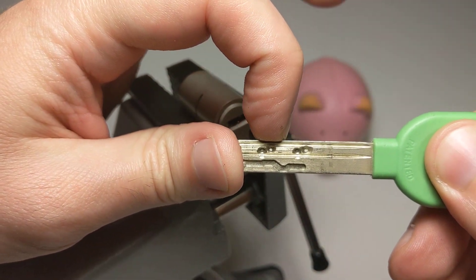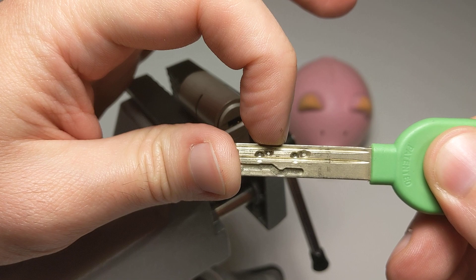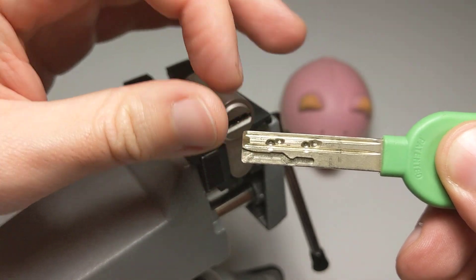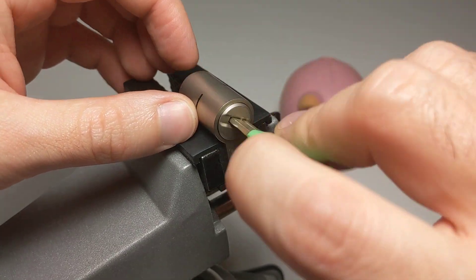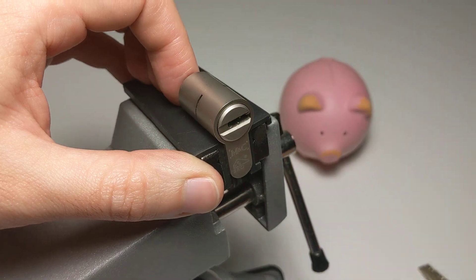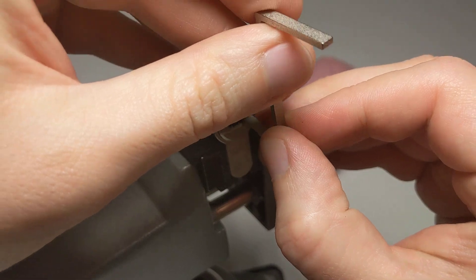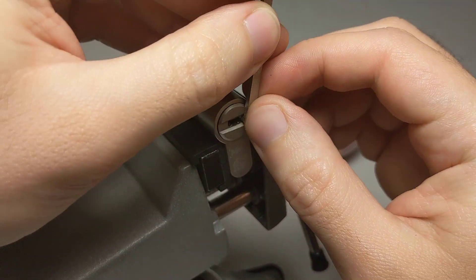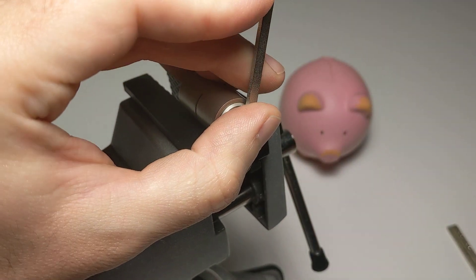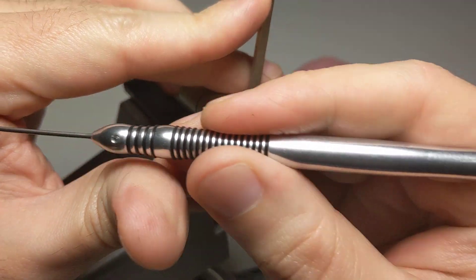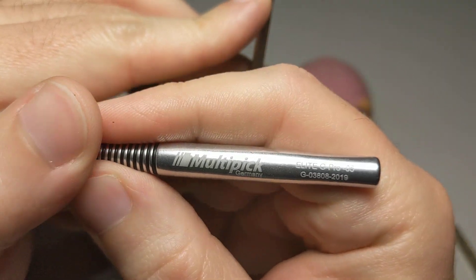The middle two dimple pins are the shortest length so the key has no cuts on it. The key works great. I'm going to be using a fat z-bar for tension and this multi-pick number five.